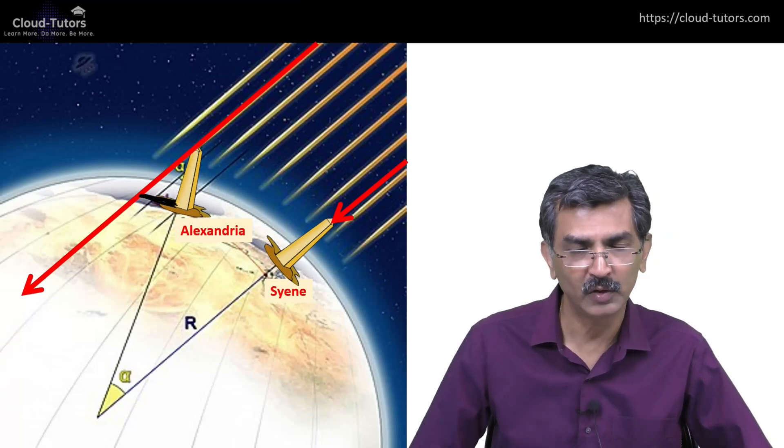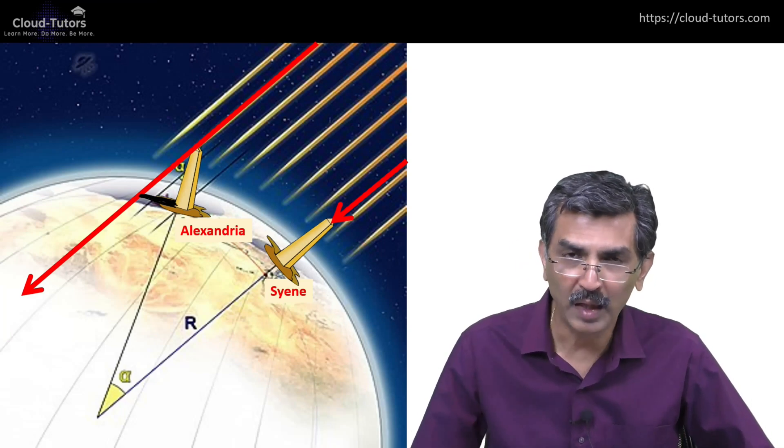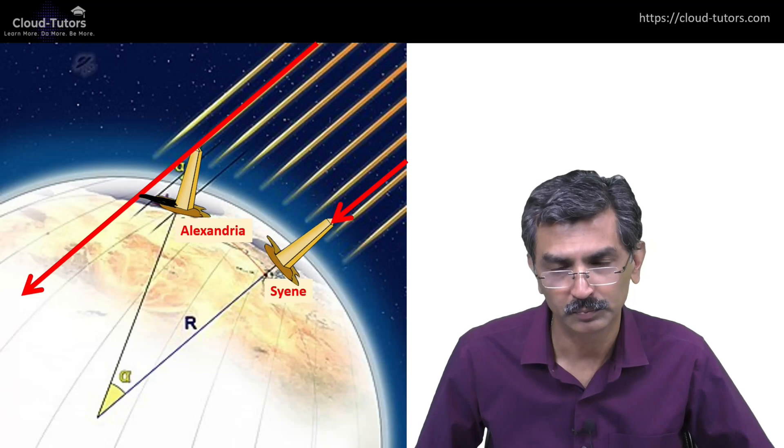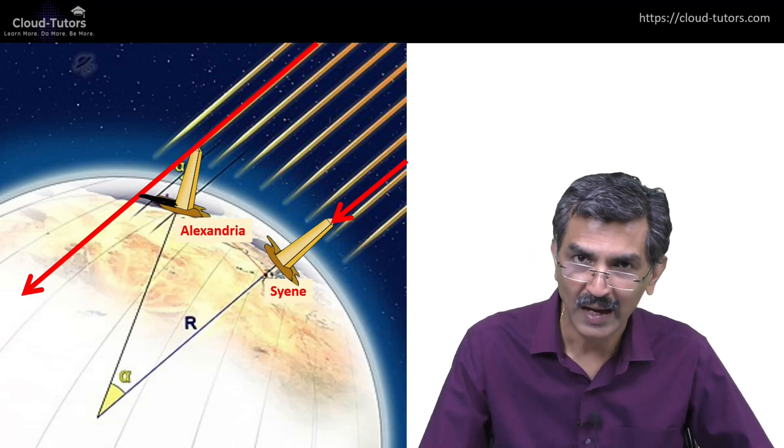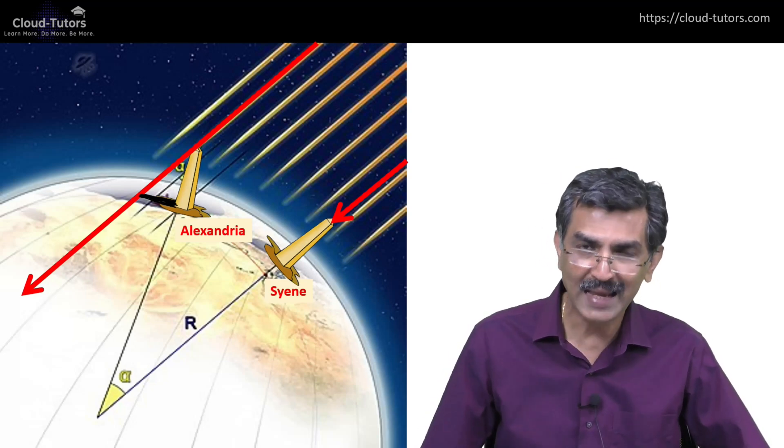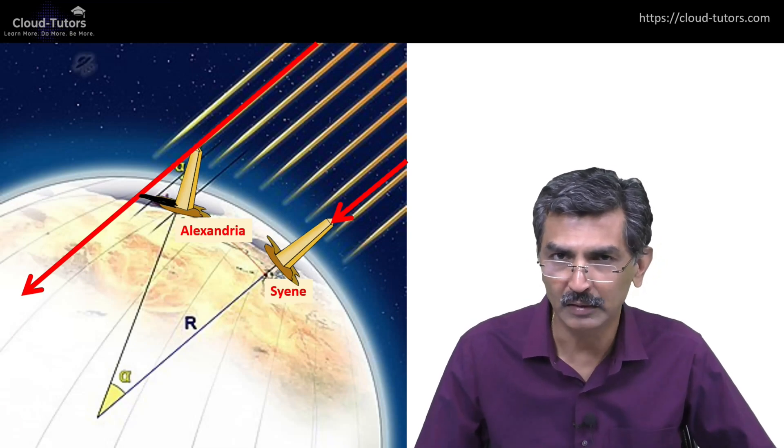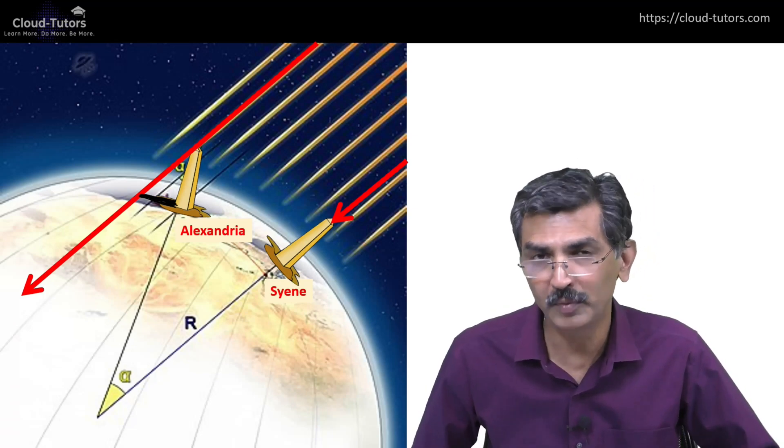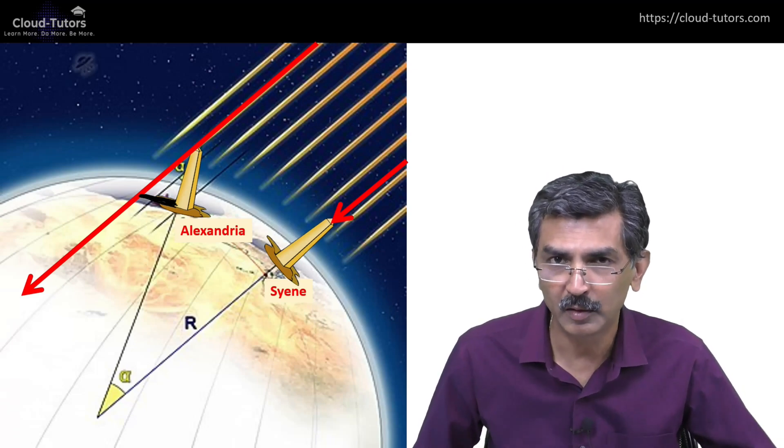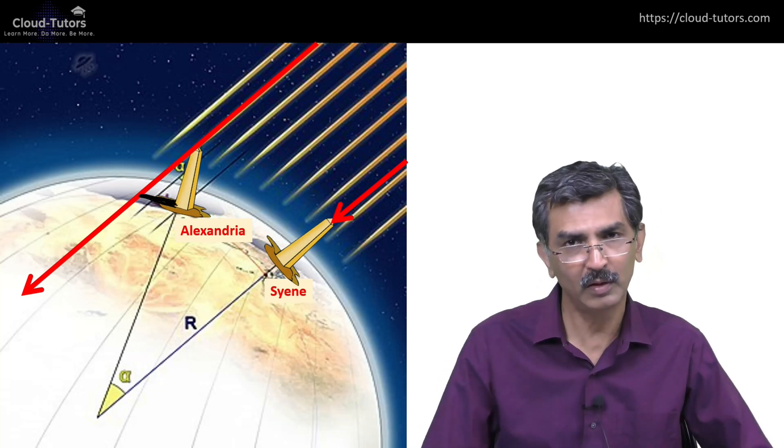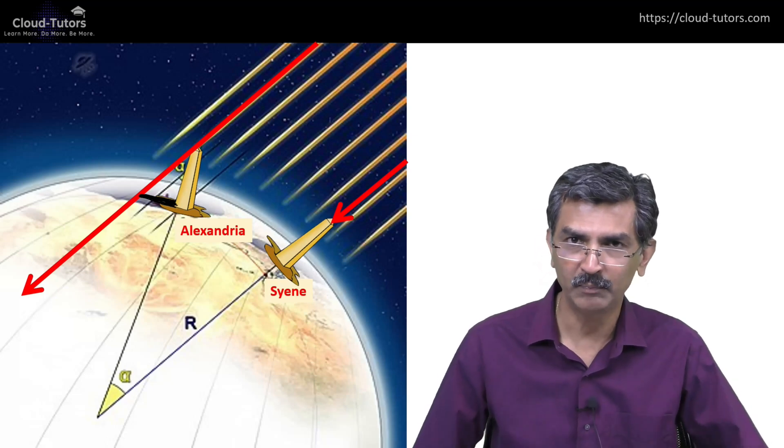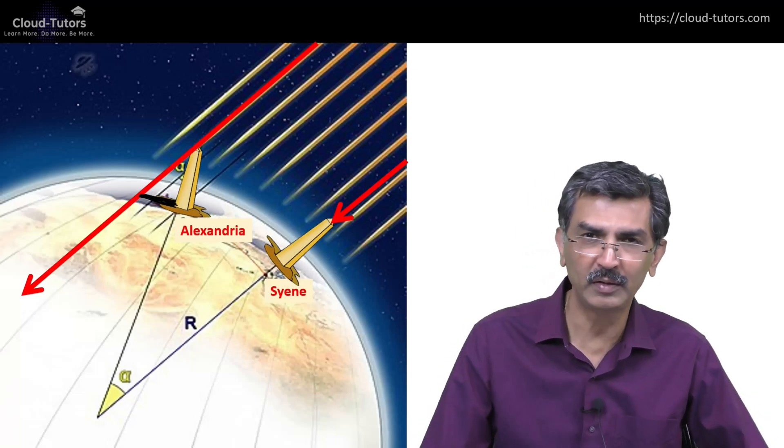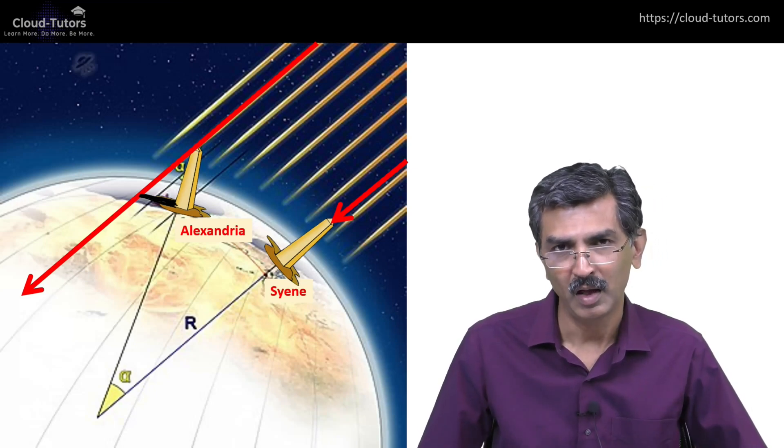He chose two locations for his experiment. One was a town called Syene and another Alexandria. Syene was selected because on a particular day the Sun would be directly overhead in Syene, which meant there would be no shadow. He chose the spot and the day to conduct the experiment when the Sun would be directly overhead in Syene. In another location, Alexandria, 800 kilometers away, he erected a pole of known length. In Alexandria the Sun was not directly overhead, and therefore the pole cast a shadow.